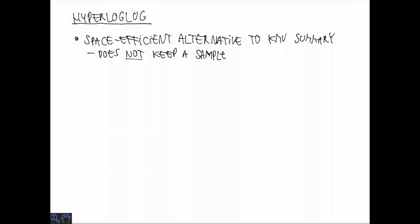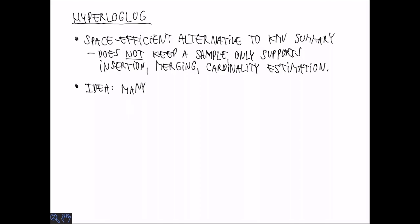The HyperLogLog summary is a space efficient alternative to the K-minimum values sketch. It doesn't keep a sample and in particular we don't know what are any of the elements in the set, but it does support insertion, merging and cardinality estimation. The idea is to combine a lot of crude estimators of cardinality. Each of these estimators should use only a small number of bits.